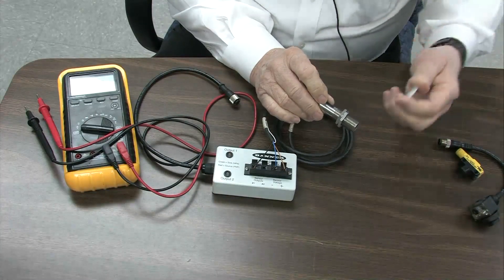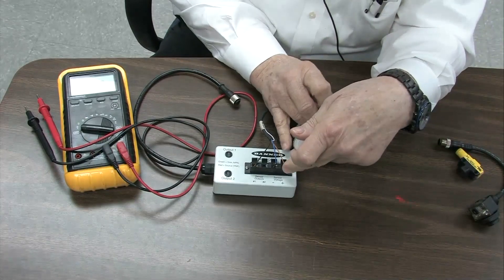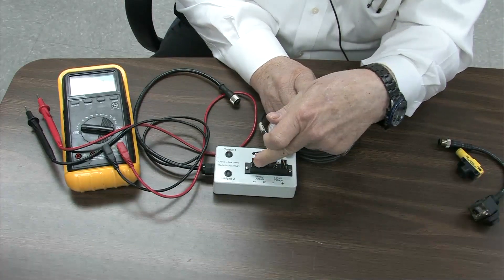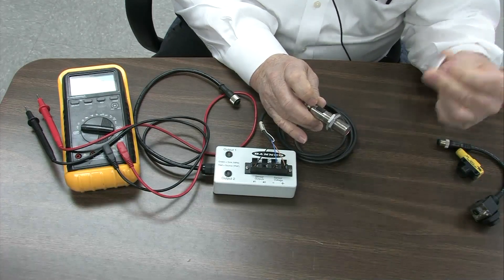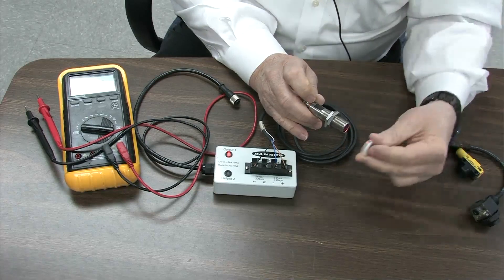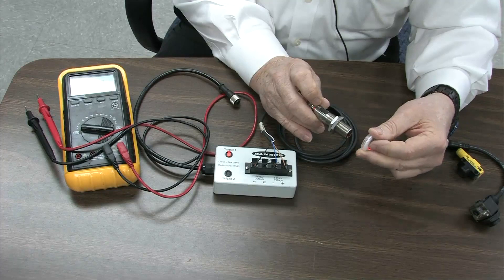There. Pays to hook it up correctly. Red is plus. Blue is minus. Black is output number one. So now when I bring the reflector in front, the light comes on. Excellent.